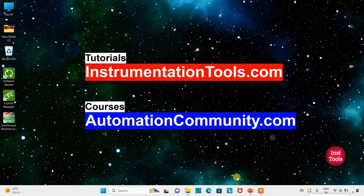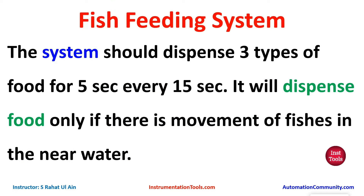Hello friends, welcome to Automation Community. Today in this video we are going to discuss an example about a fish feeding system. The system should dispense three types of food for 5 seconds after every 15 seconds. It will dispense food only if there is movement of fishes in the nearby water, so there will be a sensor to detect the movement of fishes, and there will be three valves that will dispense three types of food.